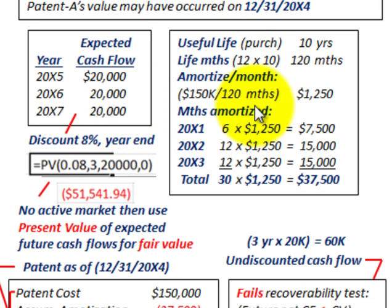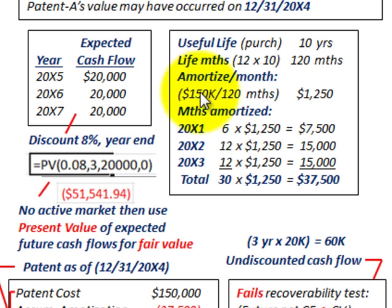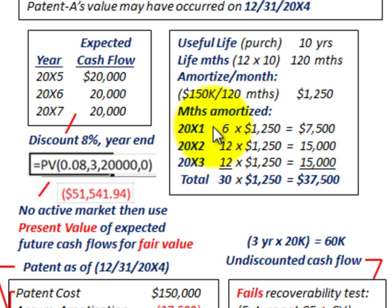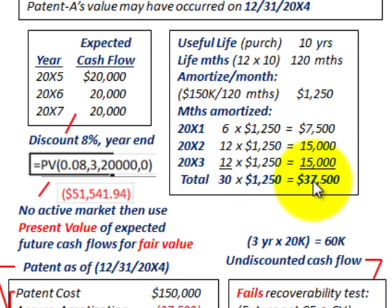We also need to calculate our amortization to date. The useful life was 10 years, or 120 months total. The purchase cost of $150,000 divided by 120 months gives us $1,250 per month. For our impairment testing at the end of 20X4: in 20X1 we had six months at $1,250/month, and then for 20X2 and 20X3 we had full 12 months per year — 30 months total times $1,250 per month gives us $37,500 amortized on this patent.